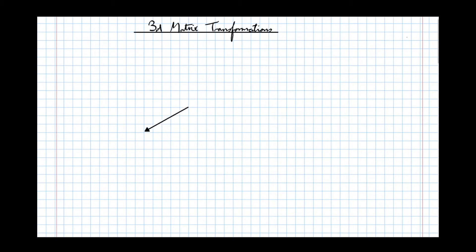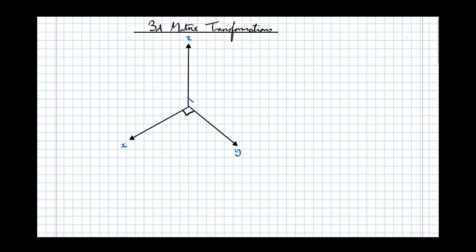The X axis usually comes out of the page and to the left. The Y axis again points out of the page but to the right, and it's actually at right angles to the X axis. The Z axis points directly upwards in the same plane as the page. So labelling those three axes X, Y and Z — X there, Y, and the Z axis — with right angles between them.